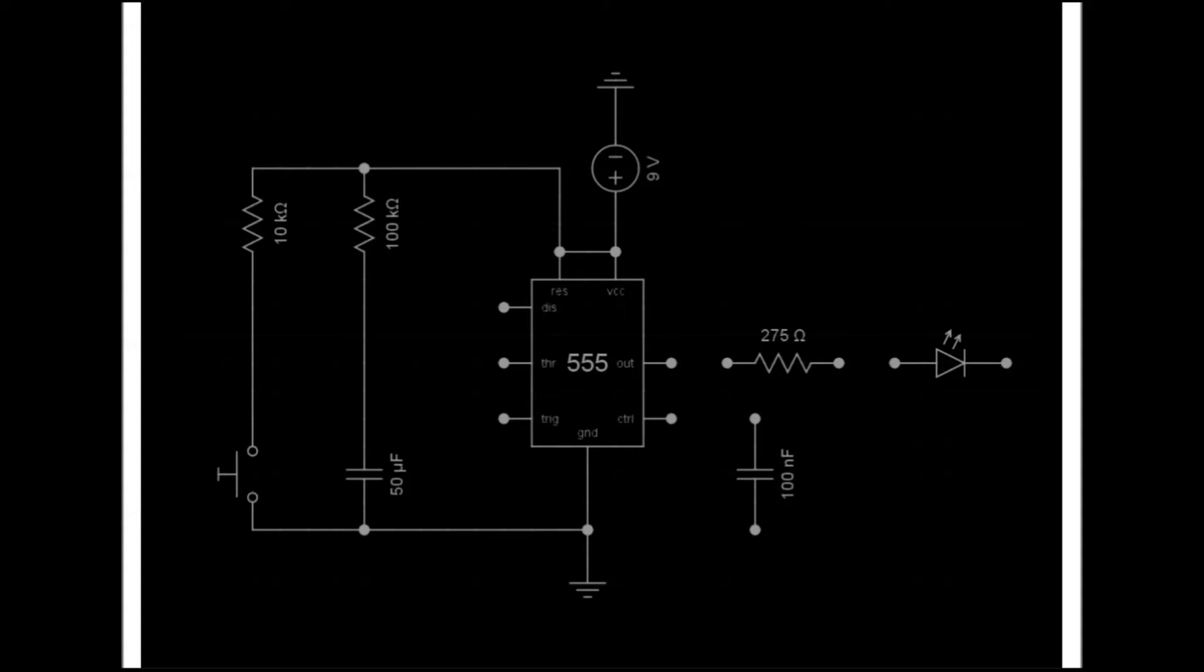Pin 2, the trigger pin, is connected between the switch and the pull-up resistor. Pin 7, the discharge pin, is connected between R1 and C1. Pin 6, the threshold pin, is connected with pin 7.